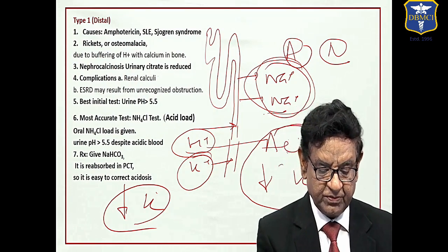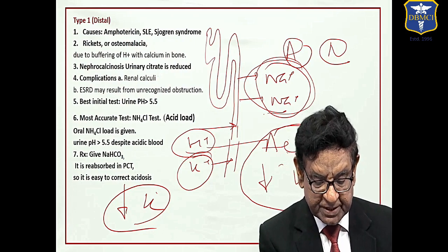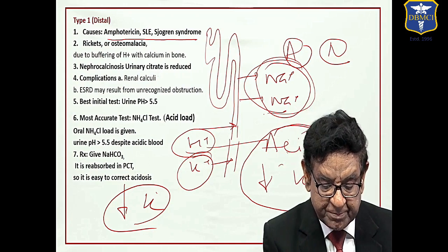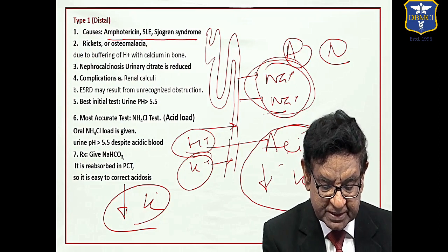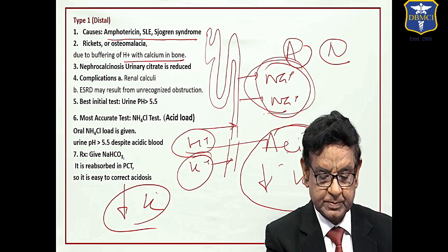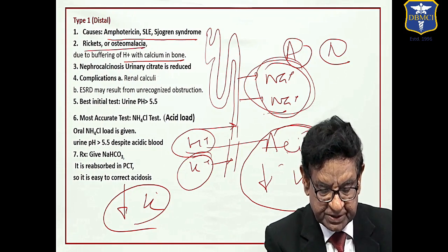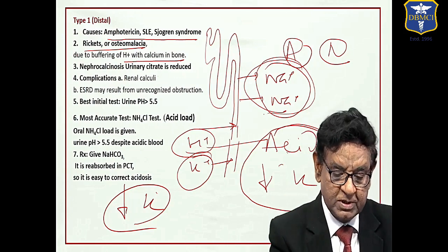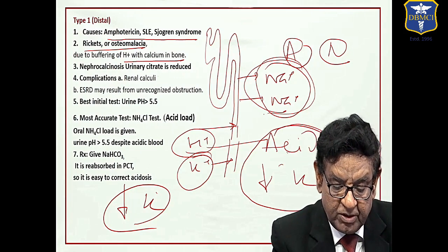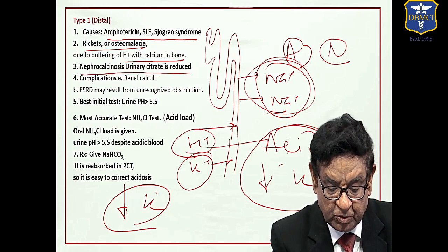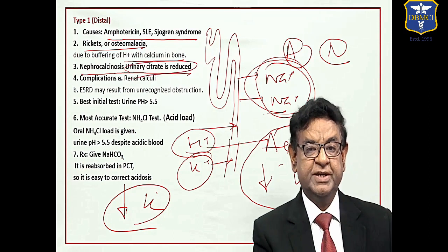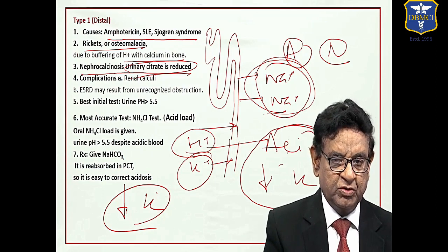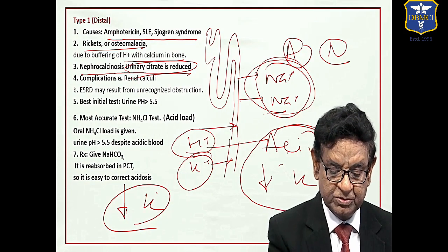What are the causes of this condition? This may occur by drugs like amphotericin, SLE, Sjogren syndrome. There is hypercalciuria because of buffering of H ion with calcium in the bones. That leads to nephrocalcinosis and osteomalacia. Remember same thing happens in type 2 RTA also. That leads to nephrocalcinosis and renal stones. Why? Urinary citrate is reduced. That precipitates the calcium in the tubule as well as in the nephron. Renal stone formation and nephrocalcinosis is a feature because of the reduced urinary citrate.